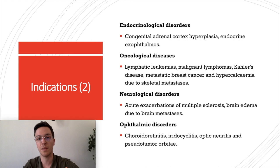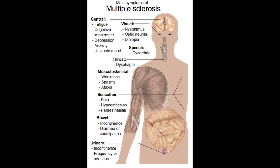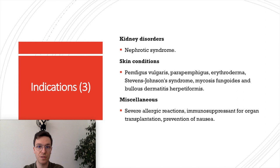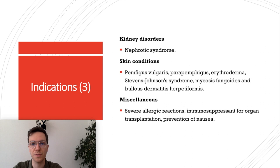In endocrinological disorders it can be used to treat congenital adrenal cortex hyperplasia, requiring maintenance treatment. For oncological diseases it has several use cases: lymphatic leukemias, malignant lymphomas, and Castleman's disease. It can be used in neurological disorders like acute exacerbations of multiple sclerosis, ophthalmic disorders like optic neuritis, kidney disorders like nephrotic syndrome, skin disorders like pemphigus vulgaris or erythroderma, and a miscellaneous category involving severe allergic reactions, immune suppression, organ transplantation, and prevention of nausea.